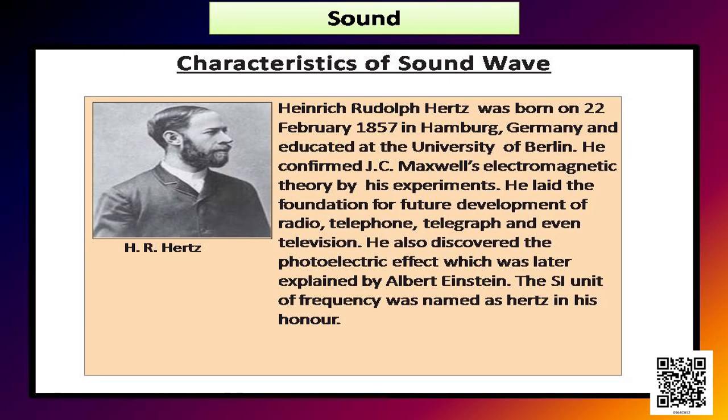Heinrich Rudolf Hertz was born on 22 February 1857 in Hamburg, Germany, and educated at the University of Berlin. He confirmed J.C. Maxwell's electromagnetic theory by his experiments, and laid the foundation for future development of radio, telephone, telegraph, and television. He also discovered the photoelectric effect, which was later explained by Albert Einstein. The SI unit of frequency was named Hertz in his honor.